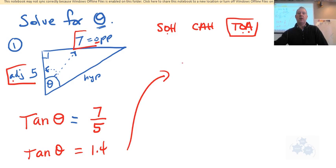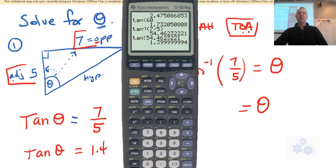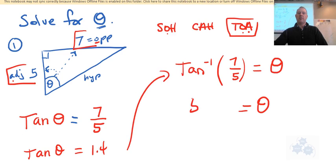So again, to find the angle, you would go tan to the negative one, that second function tan, of either 7 over 5, or you could put your 1.4 in there, and that will give you theta. So in this case, theta is equal to 54 point, and we'll say 54.5.